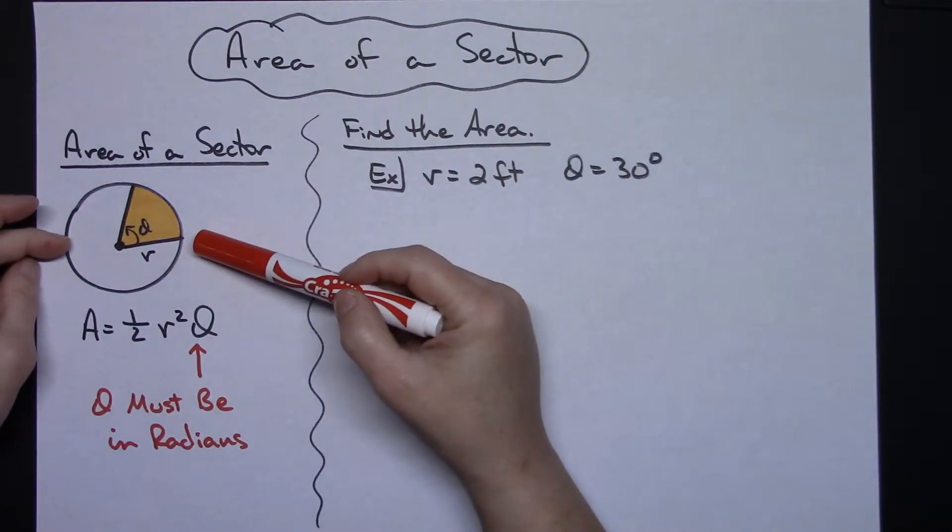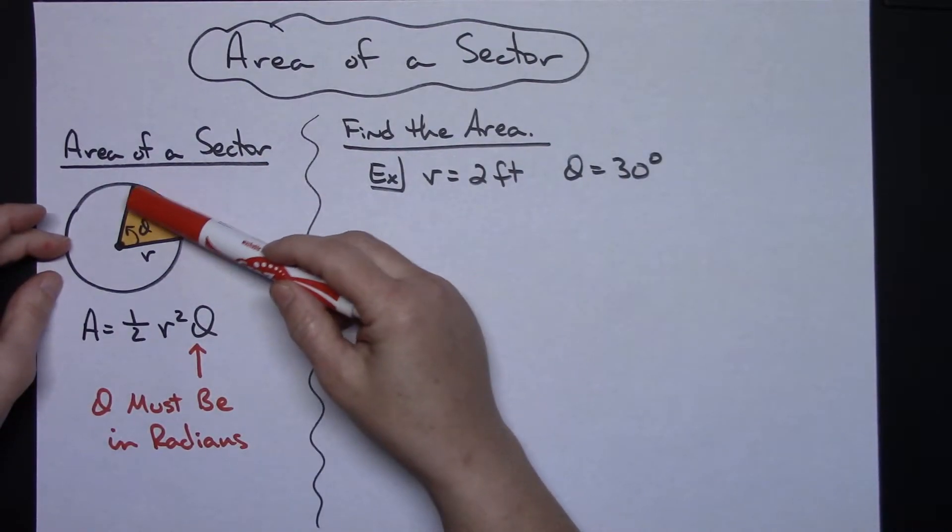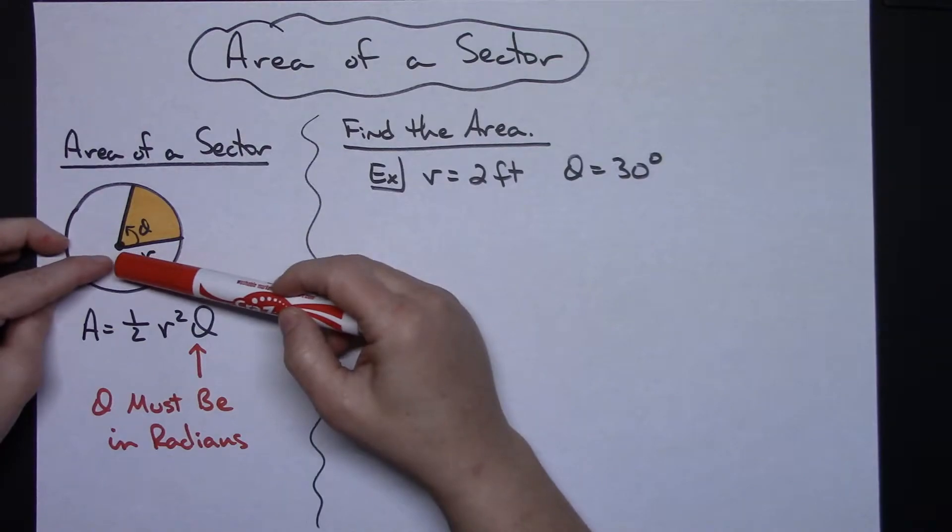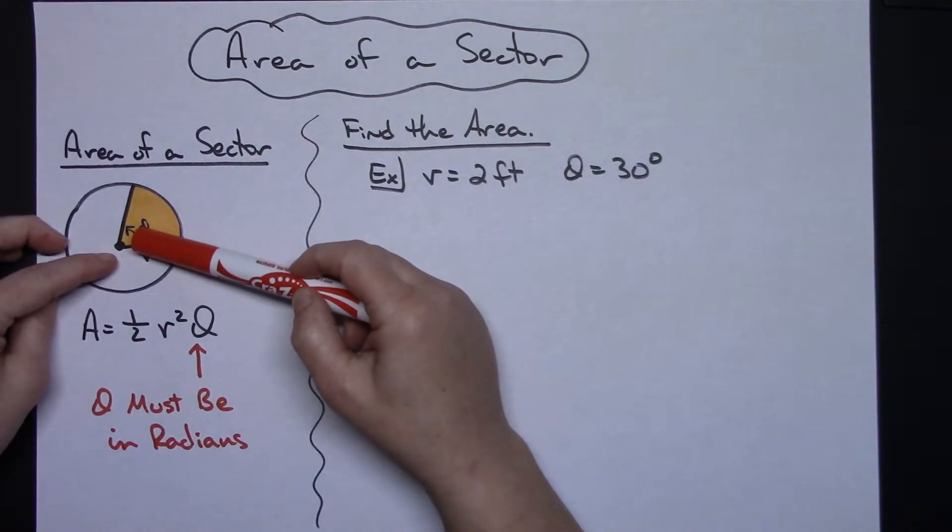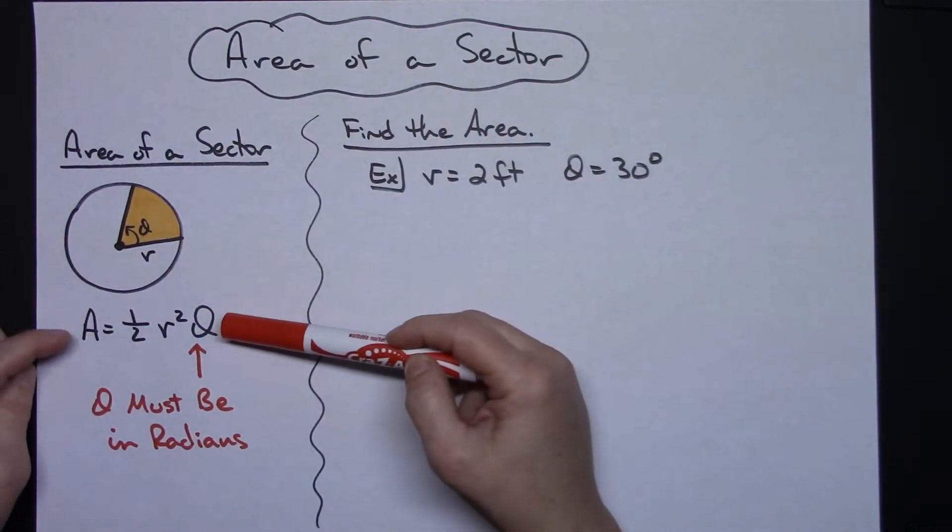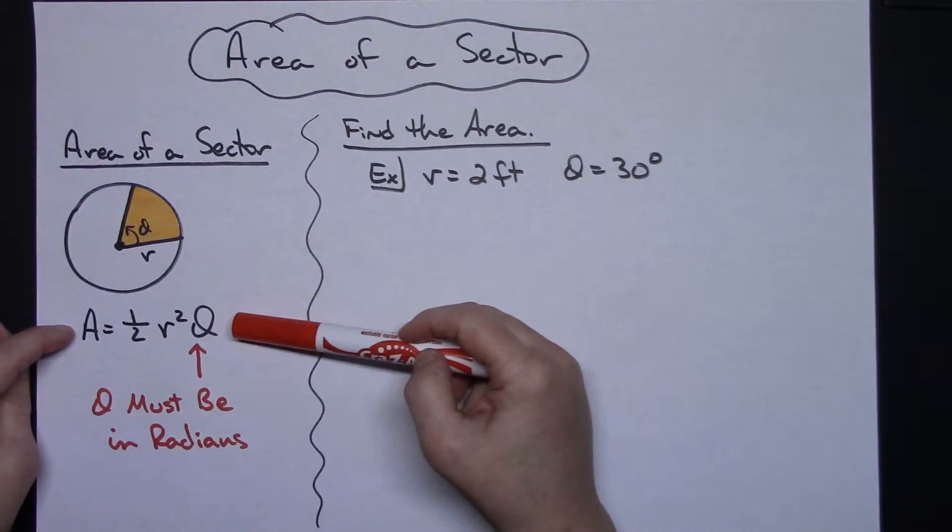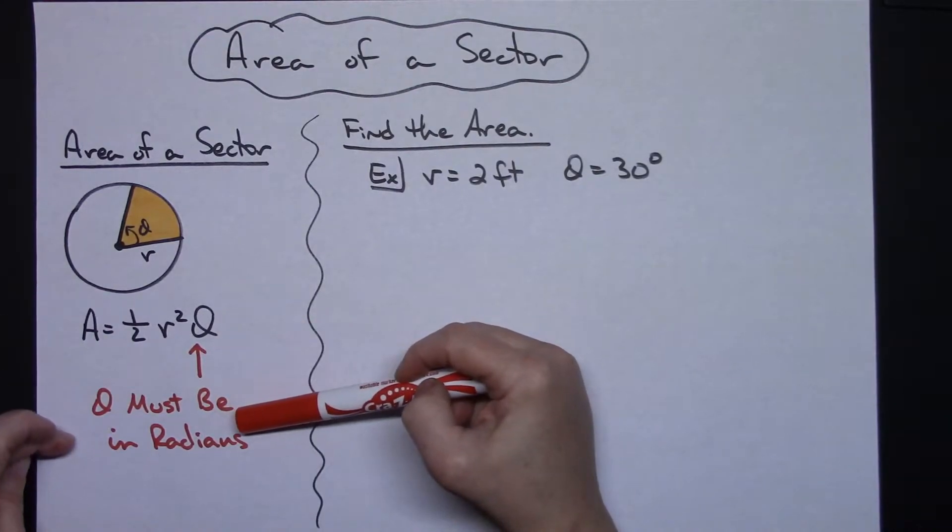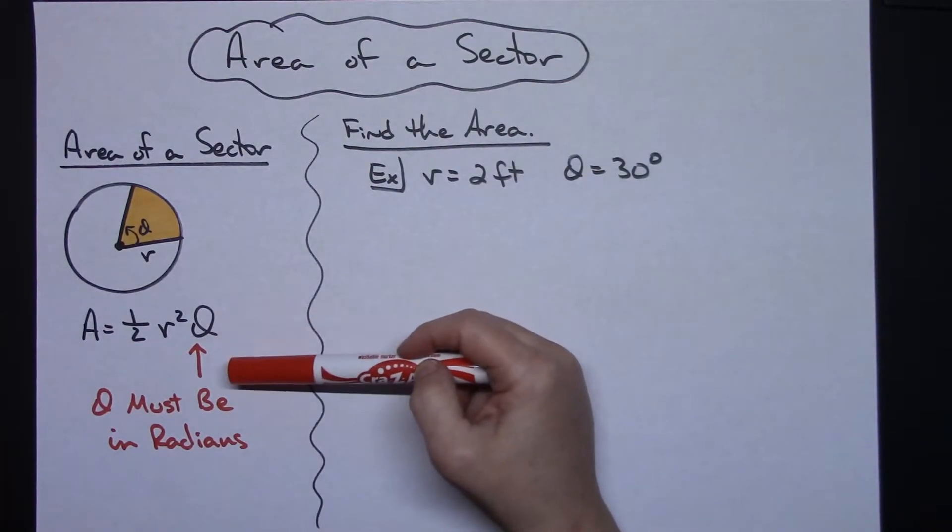I have a picture drawn here of a circle and I've colored in the sector. Let's say I have a given radius of r and I have a given theta. The formula for the area of a sector is area equals one-half r squared theta, and there is a condition that theta must be in radians to use this formula.